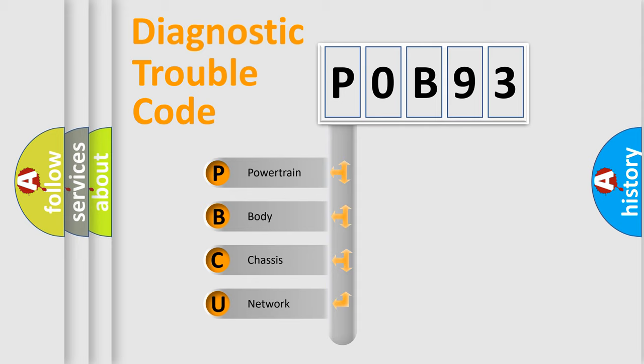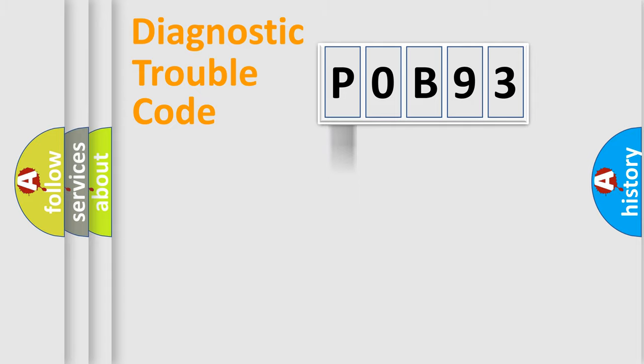We divide the electric system of the automobile into four basic units: Powertrain, Body, Chassis, Network. This distribution is defined in the first character code.